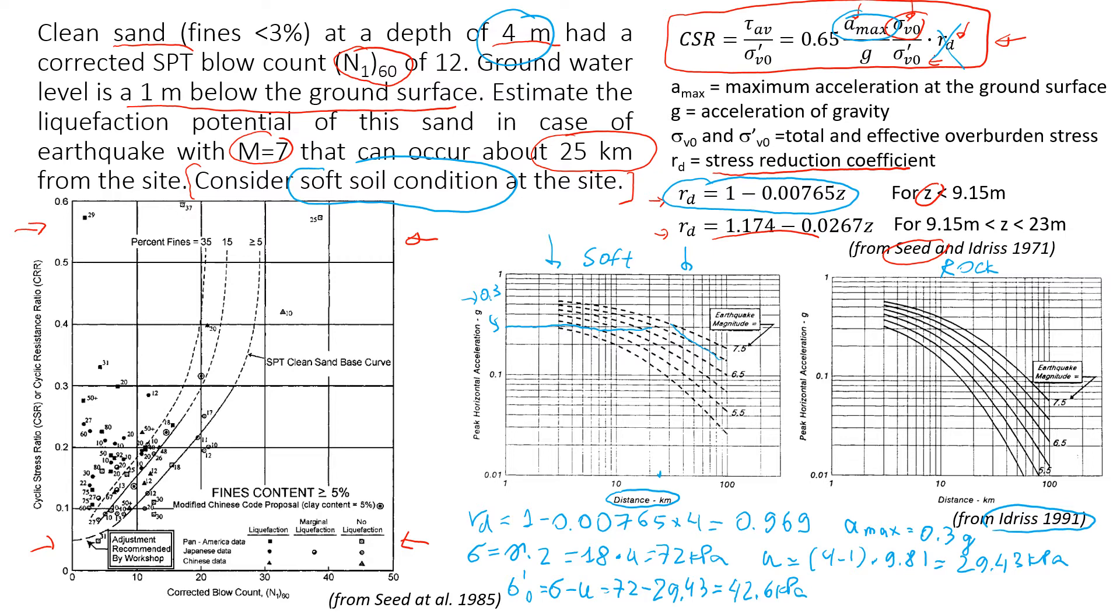Okay, so now we're going to estimate cyclic stress ratio. So we're going to write now that cyclic stress ratio, CSR, is 0.65 times the peak acceleration, which is 0.3g divided by g, so in this case same thing.